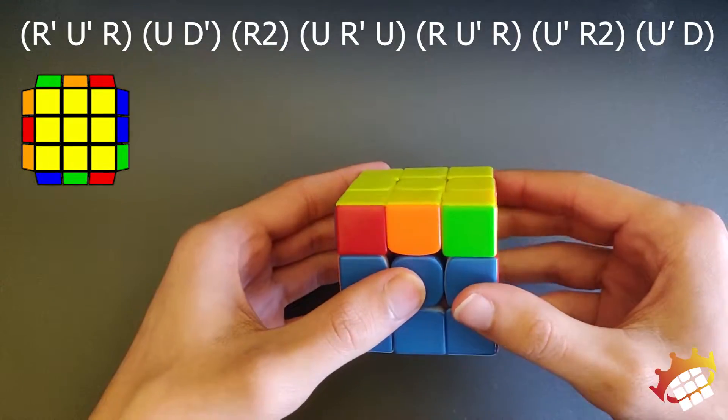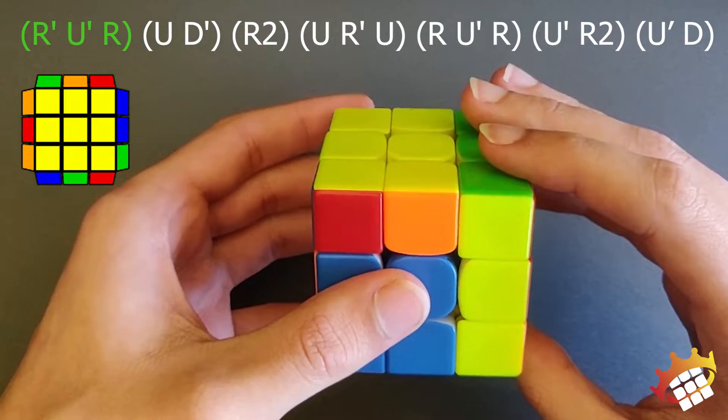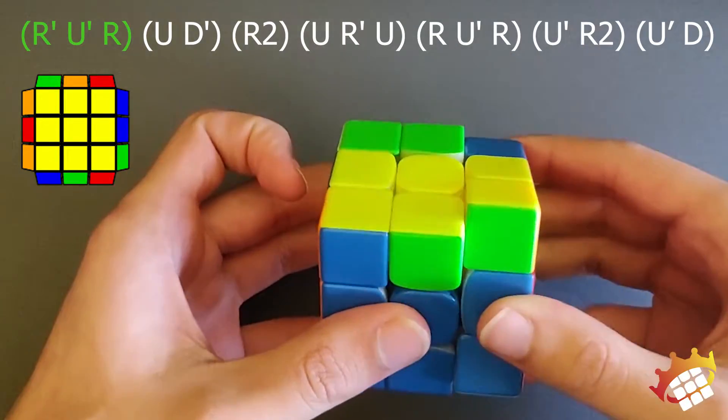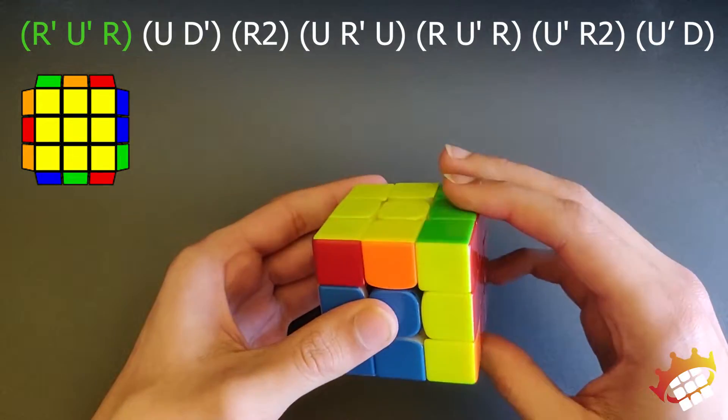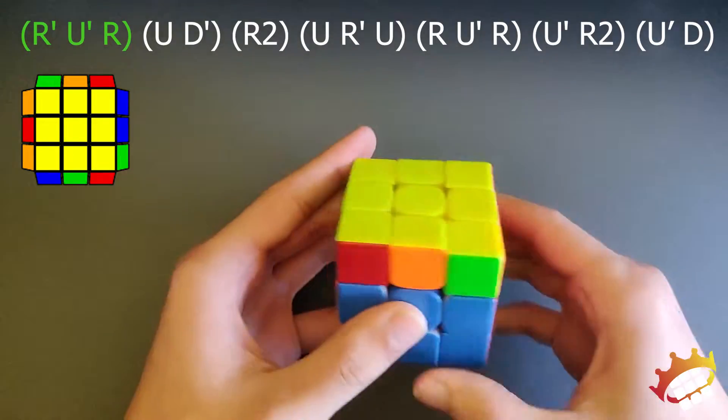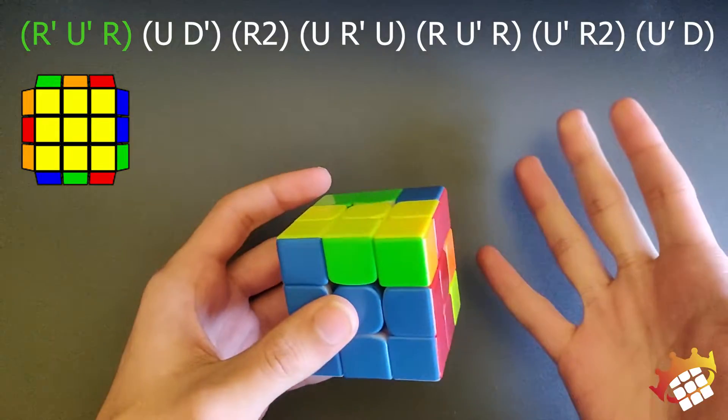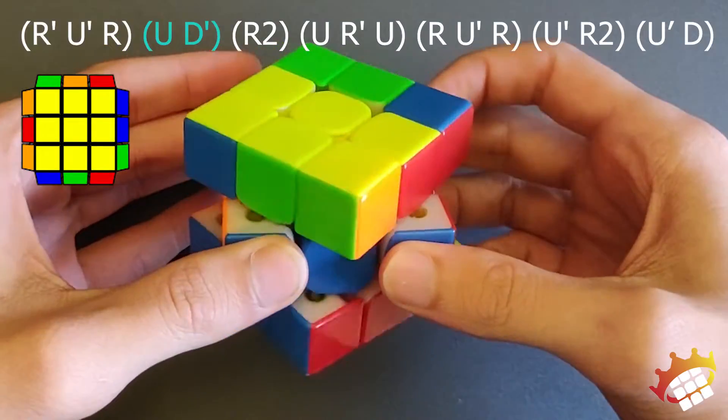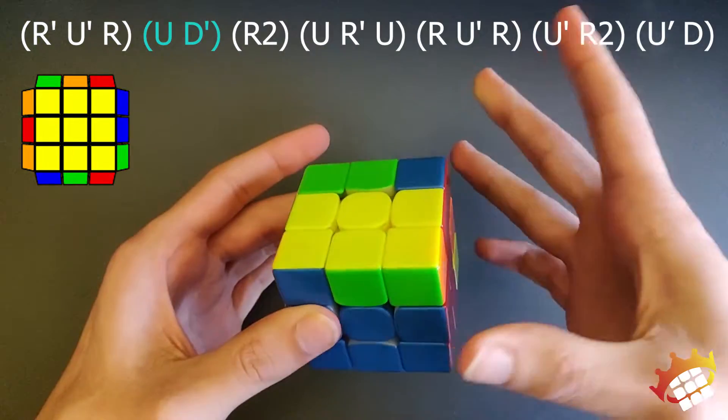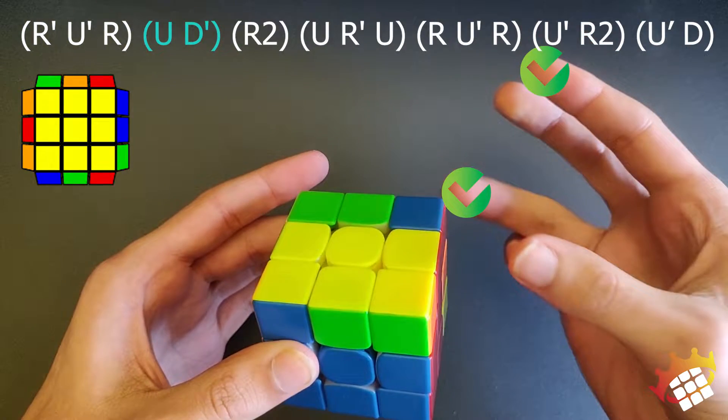First thing you're going to do, we're just going to go R prime U prime R. That's it, just get that in your head. R prime U prime R, you reckon you can do that? Simple. Once you've memorized that, then we're just going to do a cheeky UD, just like this, flick with this finger and this finger.